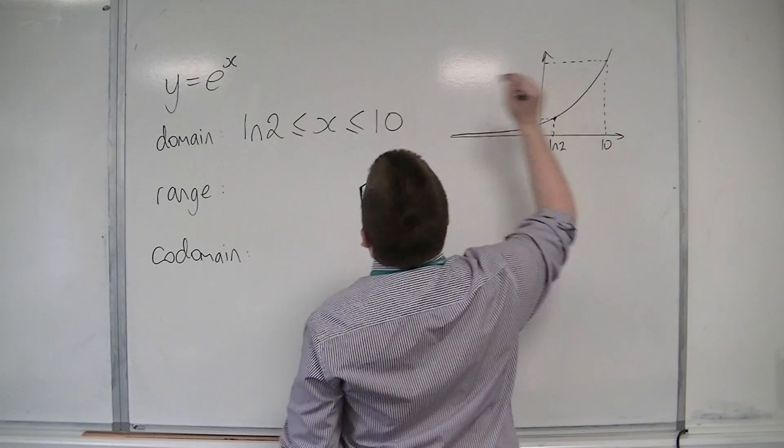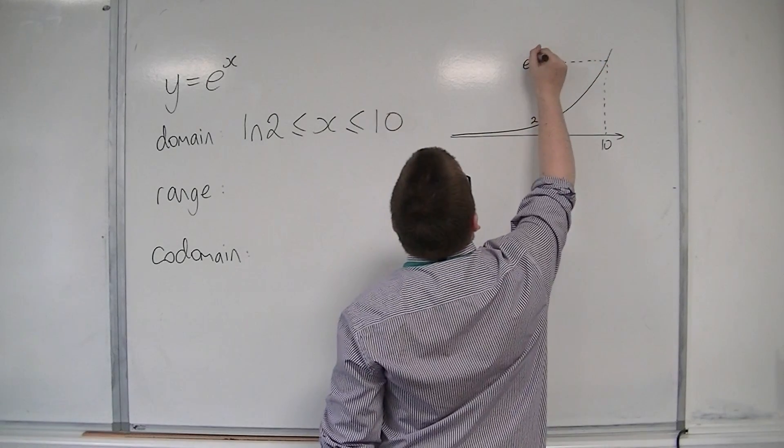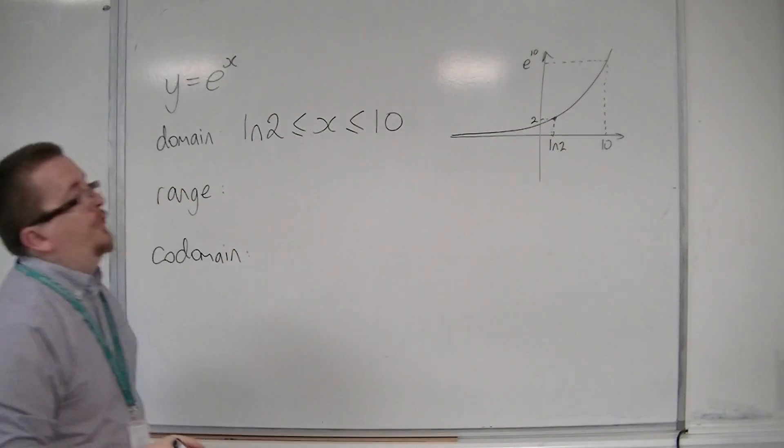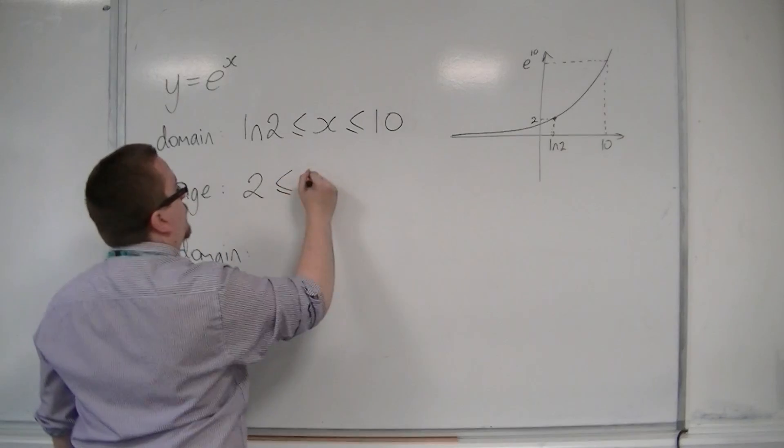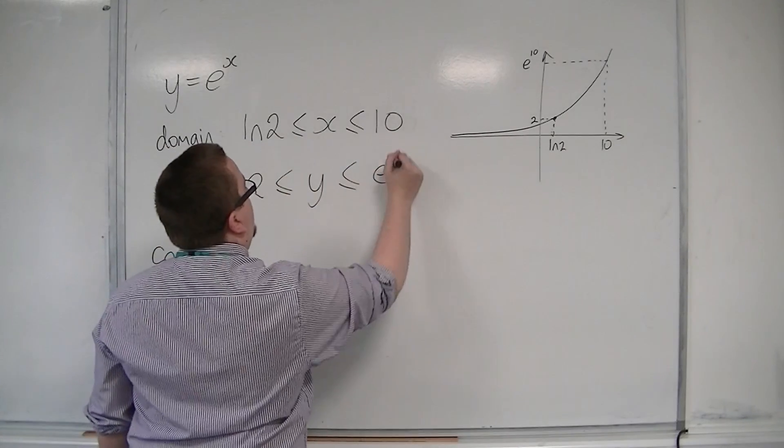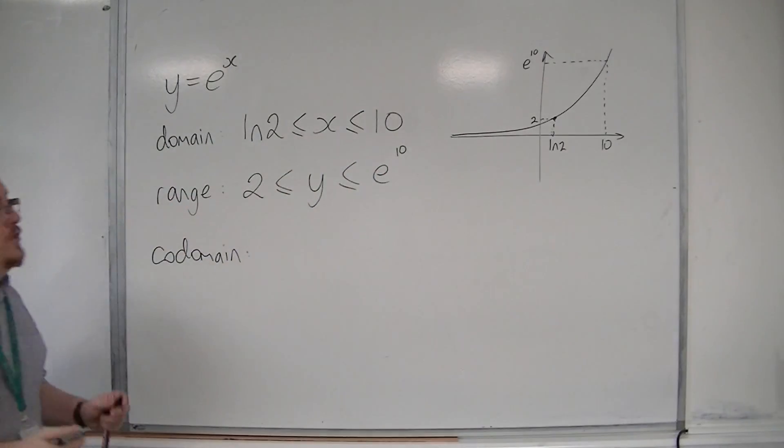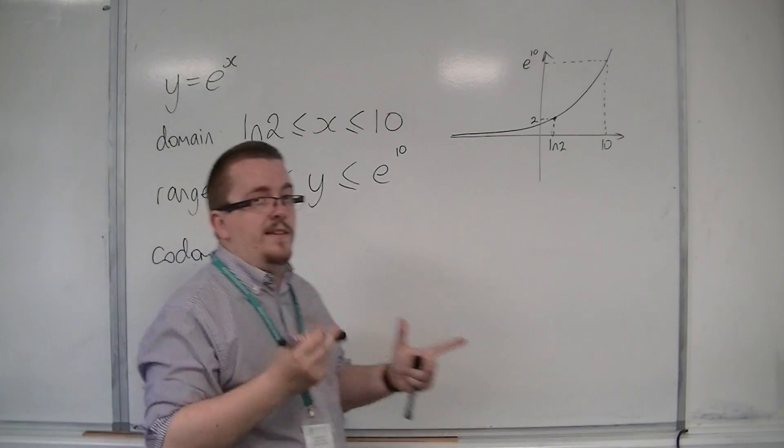And if I put in x is 10, I get e to the 10. And so the range is from 2 up to e to the 10, which is a large number, and I'm going to leave it as e to the 10.